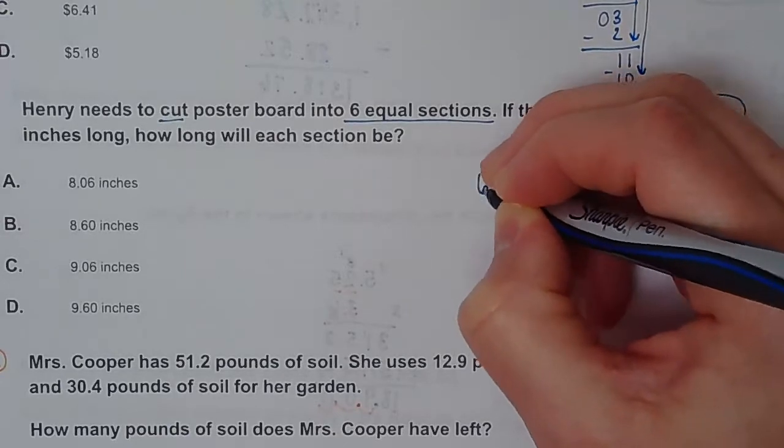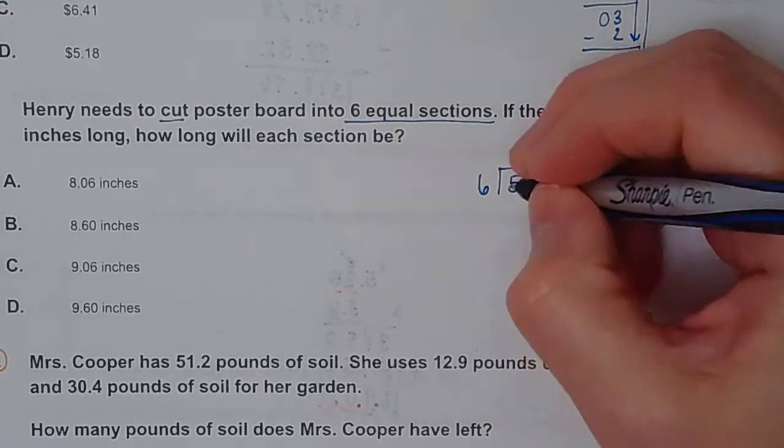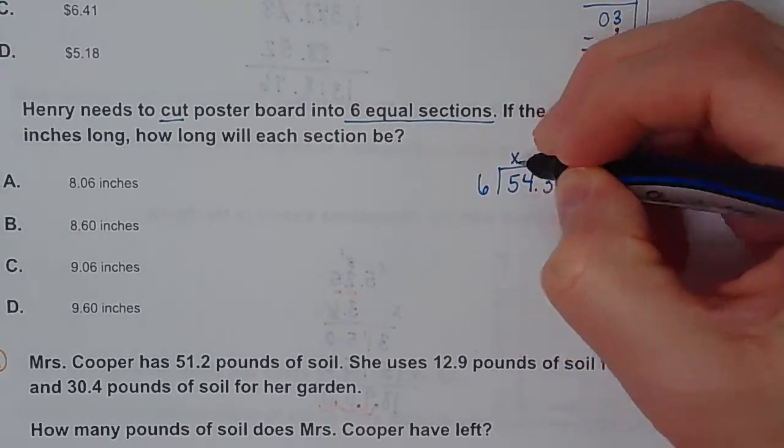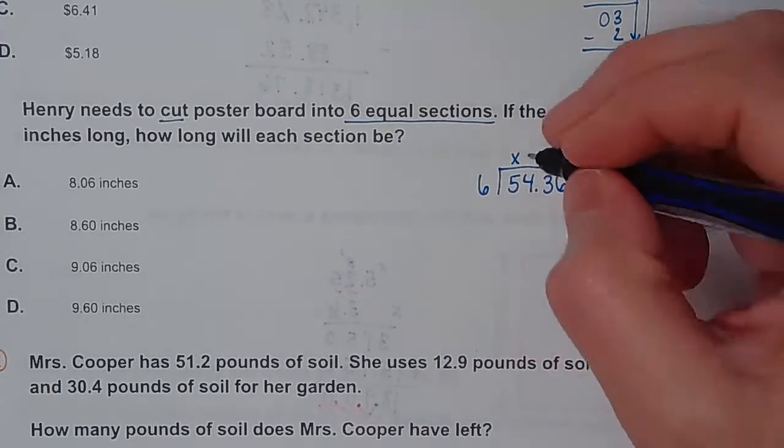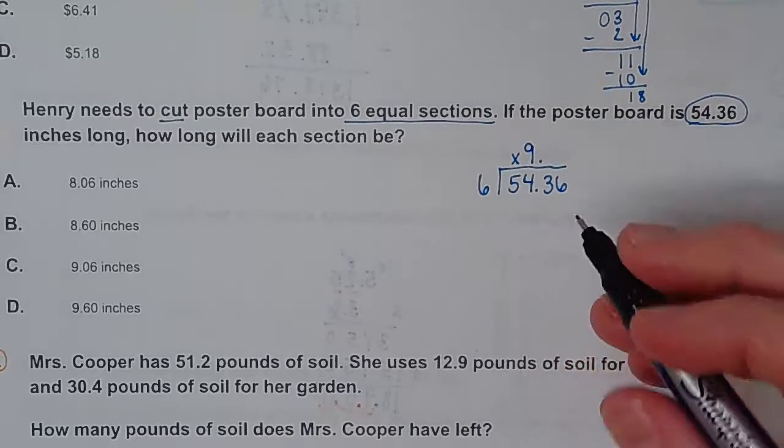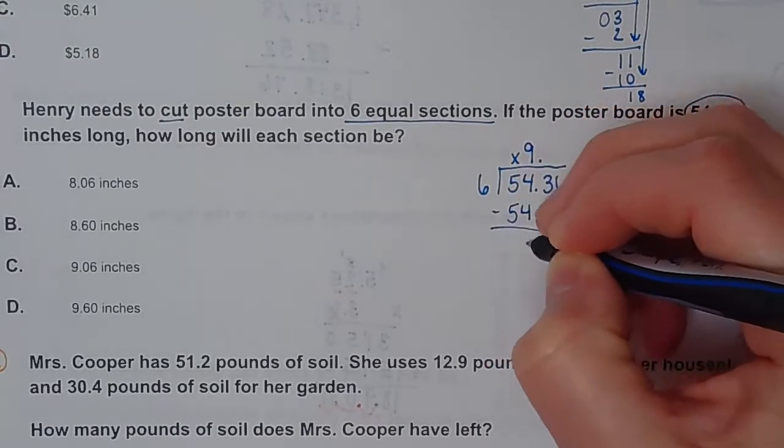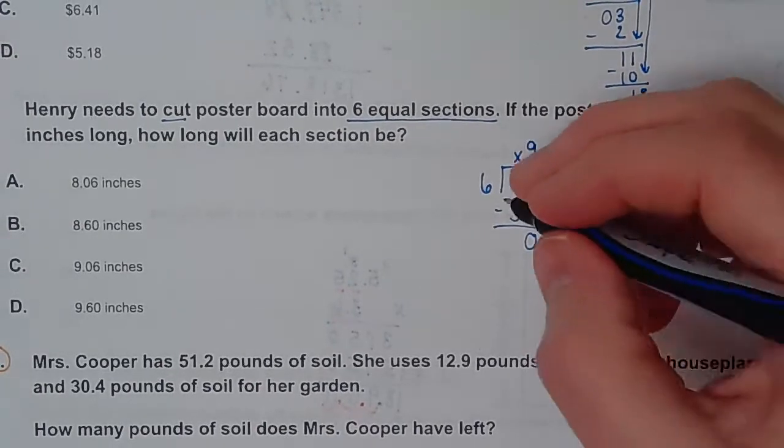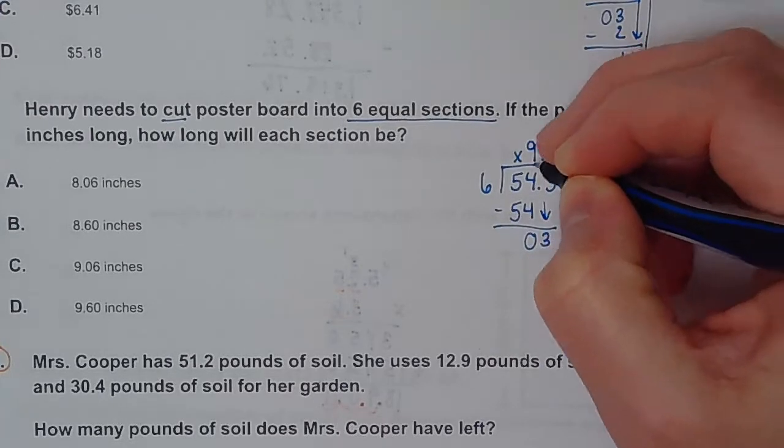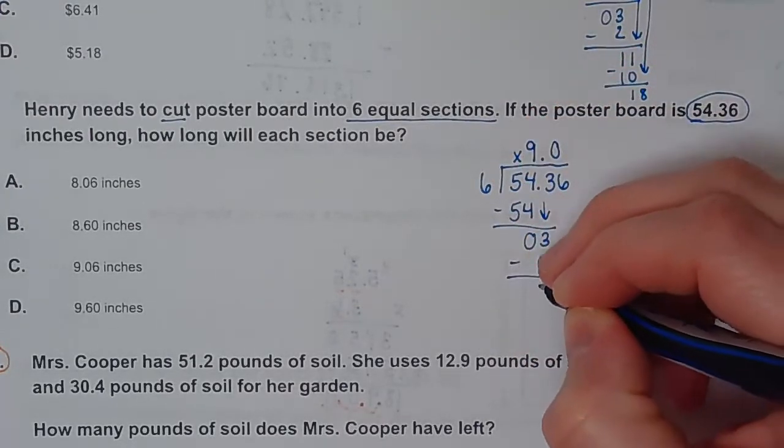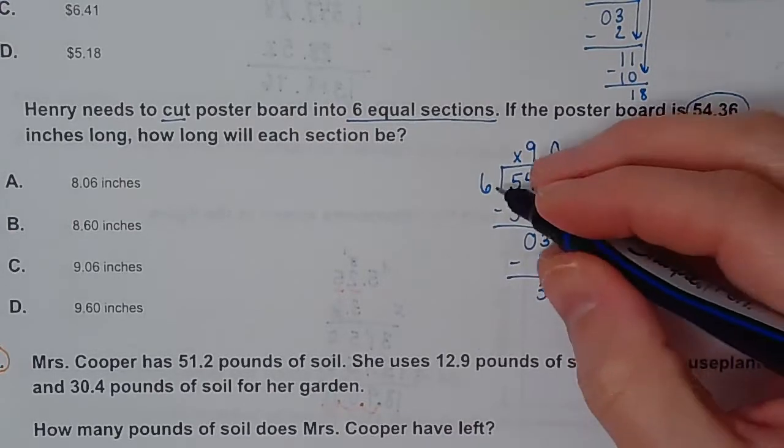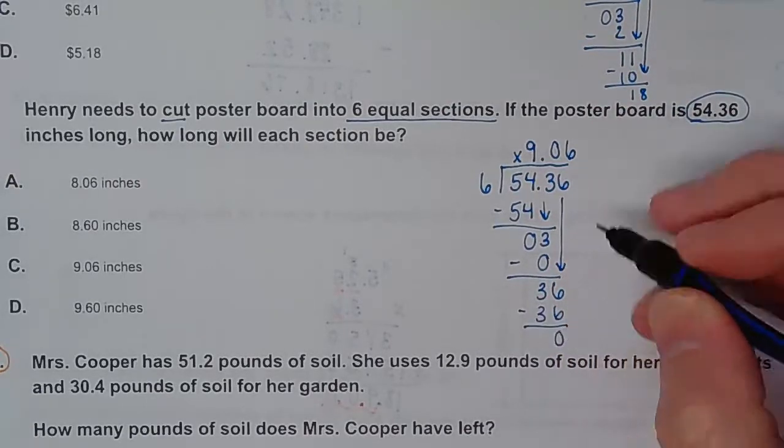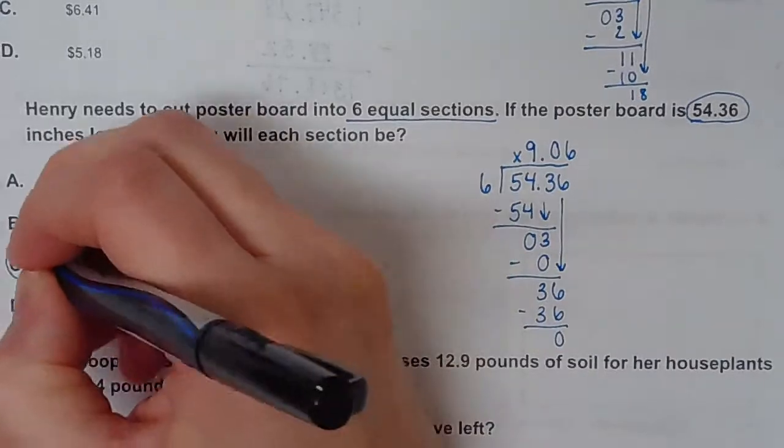So we're going to take this number right here, it's going inside of my house, and I'm dividing it by six. I can just bring my decimal straight up because my number is already a whole number. Six goes into 54 nine times. Nine times six is 54, so I get zero. Bring down my three. Six does not fit into three, so that's a zero. Bring down this six. Six fits in 36 nine times. Six times six is 36, so I'm done. 9.06 inches is my answer.